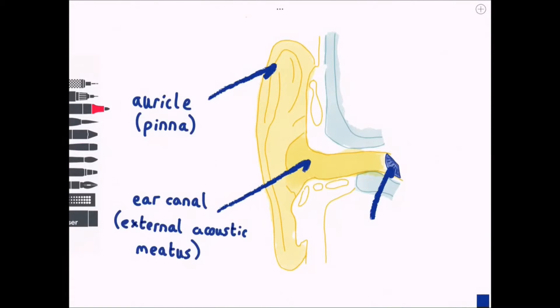This tunnel starts off as cartilage and becomes bony and it leads to the tympanic membrane or eardrum. A cool fact about the eardrum is that if you were to give it a tattoo, the tattoo would gradually move down towards the outer ear and this is due to a process known as lateral migration.